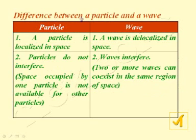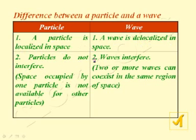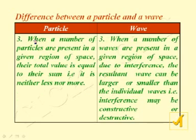Difference between particle and wave character: A particle can be localized in space, while a wave is delocalized in space. Particles do not interfere, whereas waves easily interfere because two or more waves can coexist in the same region of space. When a number of particles are present in a given region of space, their total value is equal to their sum.